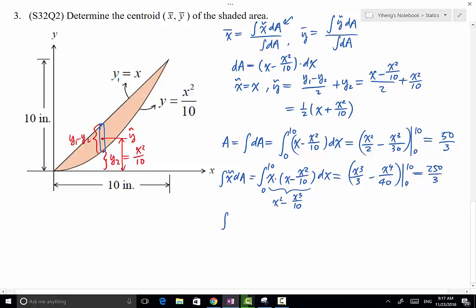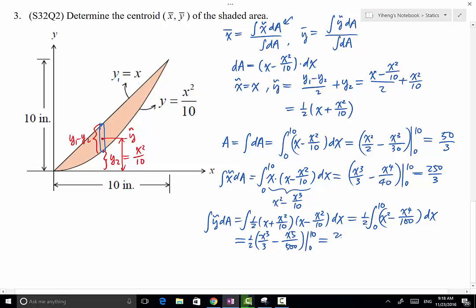And lastly we have y-tudor dA, which equals y-tudor equals one half x plus x squared over 10, times dA equals x minus x squared over 10 dx. This becomes one half x squared minus x to the fourth over 100 dx, again integrated from 0 to 10. And this becomes one half x cubed over 3 minus x to the fifth over 500, evaluated from 0 to 10, and that eventually becomes 200 over 3.